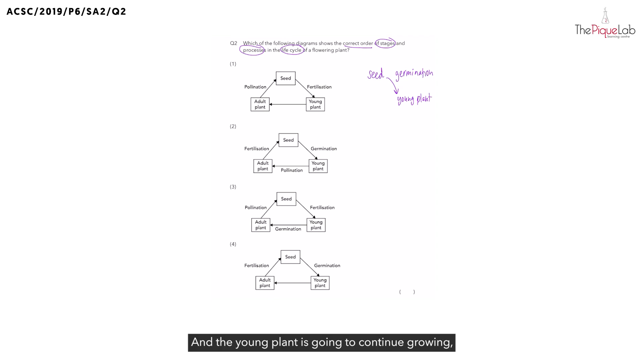And the young plant is going to continue growing and develop to become an adult plant. What features should we look out for to tell us that adult plant is ready for reproduction? We should be looking out for flowers, and the flowers will go through sexual reproduction to develop to become a fruit.